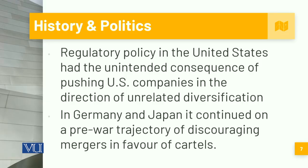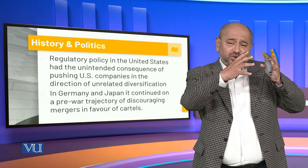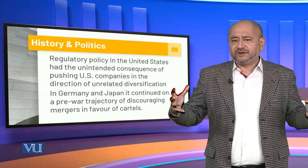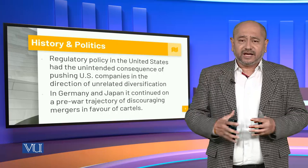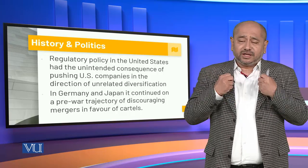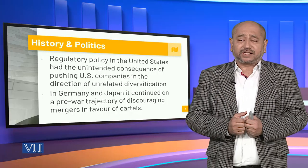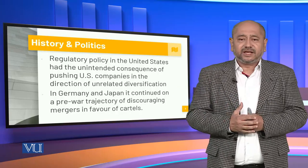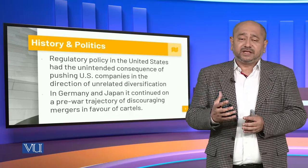Regulatory policy in the United States had the unintended consequence of pushing US companies toward unrelated diversification. In Germany and Japan, it continued on a pre-war trajectory of discouraging mergers in favor of cartels. The contextualization within the United States focused on different diversification and expansion policies, pushing shareholders toward maximization of profits, while in Japan, rather than encouraging mergers, the system basically favored cartels.